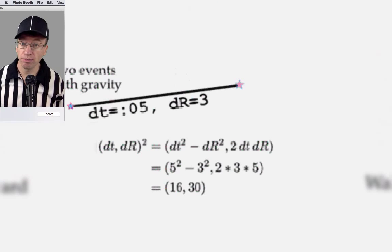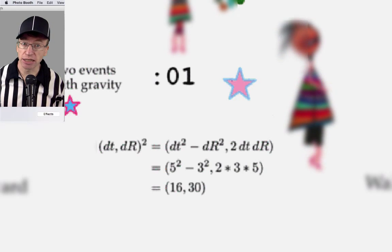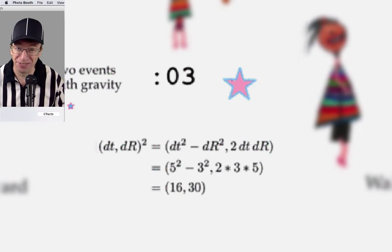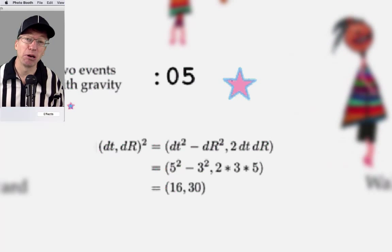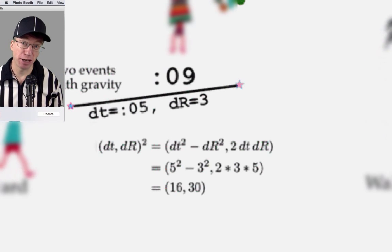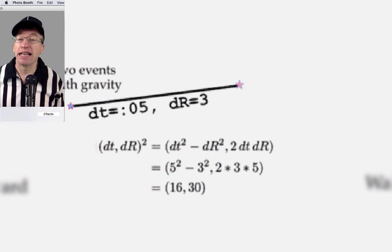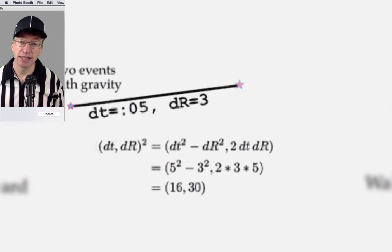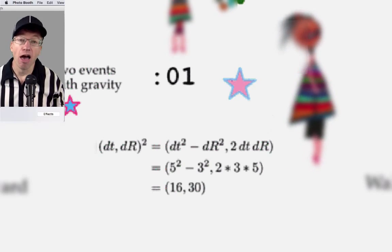The other term, it's 2 dt dr, doesn't even have a name in standard physics. I had to make one up. So, I called it space times time. Maybe I should have called it time times space, but it doesn't matter. It's 2 times 3 times 5, 30.